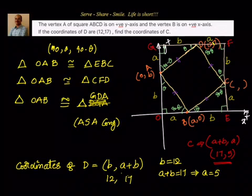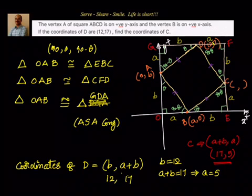If you are able to understand this, this is actually one of the ways you can prove the Pythagorean theorem. If you look at the outer square, you have (A+B) squared. The inner square has area C squared. Then we have four right-angle triangles, each with area half AB. So (A+B)² = C² + 4·(½AB), which gives A² + B² + 2AB = C² + 2AB. The 2AB cancels, leaving A² + B² = C² — that's the Pythagorean theorem.